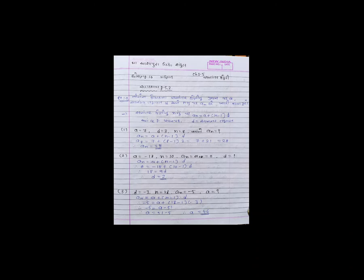દાખલા નંબર 3: D = -3, N = 18, AN = -5. અહીં આપણને A શોધવાનું છે. સૂત્ર મૂકી દઈએ: AN = A + (N-1) × D. કિંમત આપેલી છે મૂકી દઈશું, -5 = A + (18-1) × (-3). 18 માંથી 1 જાય તો 17, અને 17 × (-3) = -51. વત્તામાં -51 છે, ઓછા ઓછા ઓછા = 46. A = 46 મળે.